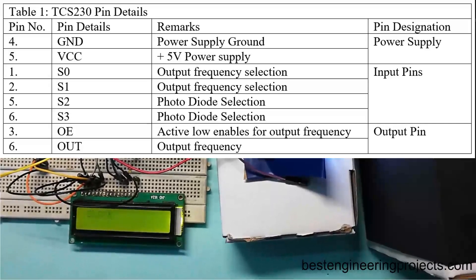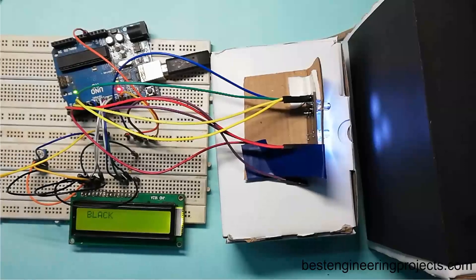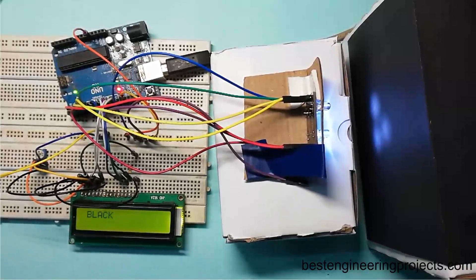Now let's see its pin diagram. It consists of a total number of 8 pins: 1 for power supply VCC, 1 for ground power supply, 4 for input, and 2 for output.